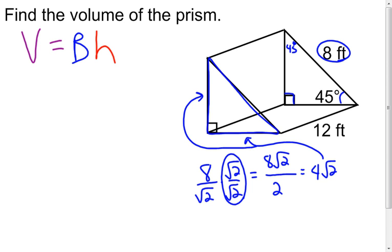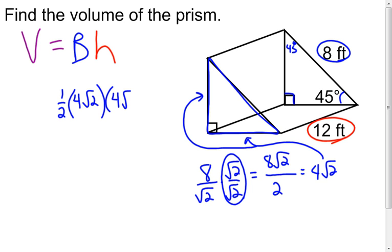Now I can find the area of the base, which is a triangle. I already know the height of the prism is 12 feet, so I have everything I need to calculate the volume. For my area of the base, it's a triangle, so I'm going to do one-half times the base of the triangle, which is four root two, times the height of the triangle, which is also four root two, and then multiply this by the height of the prism, which is 12.